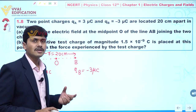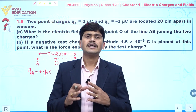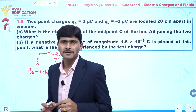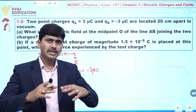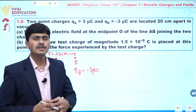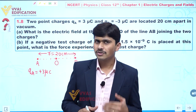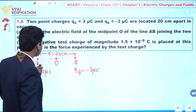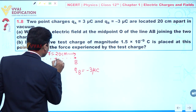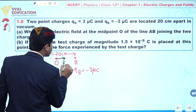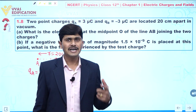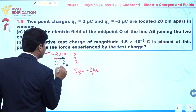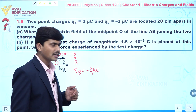We need to find the net electric field at O. Since electric field is a vector quantity, it has both magnitude and direction. Let's first find the direction logically. The electric field due to charge A (positive) points away from A, so at O it points in the direction from A toward B.